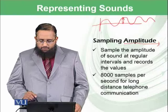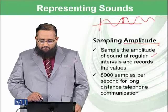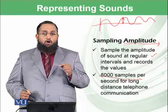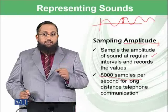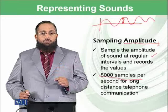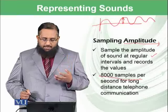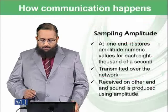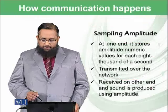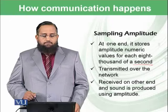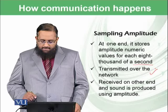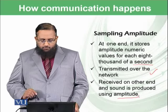Normally, we sample the amplitude of sound at regular intervals, and those regular intervals are 8000 samples per second. Within one second, we normally take 8000 readings of sound amplitude to actually reproduce the sound — especially when we are talking over long distances via telephone. At one end, it stores amplitude numeric values for each 8000th of a second, transmitted over the network. Those numerical values are binary digits, received on the other end, and sound is produced using those amplitude values.